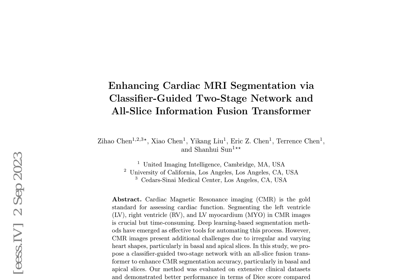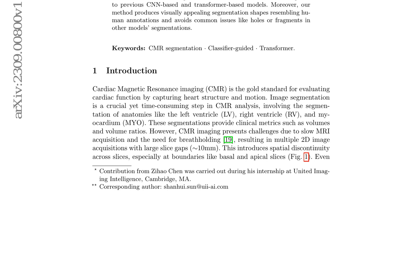This approach is evaluated on extensive clinical datasets and demonstrates better performance in terms of DICE score compared to previous CNN-based and transformer-based models. The challenges in CMR imaging arise from slow MRI acquisition and the need for breath-holding, resulting in multiple 2D image acquisitions with large slice gaps, introducing spatial discontinuity across slices, especially at boundaries like basal and apical slices. The proposed method addresses these challenges by leveraging a classifier-guided two-stage network with iterative refinement, while the all-slice information fusion transformer further enhances segmentation accuracy by aggregating information from all slices, capturing spatial dependencies and handling irregular heart shapes.